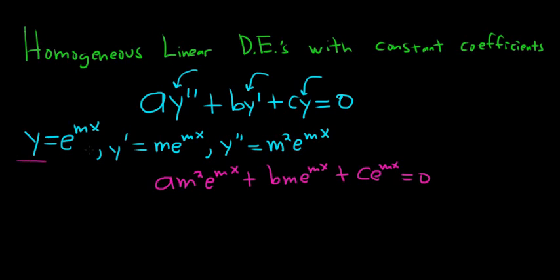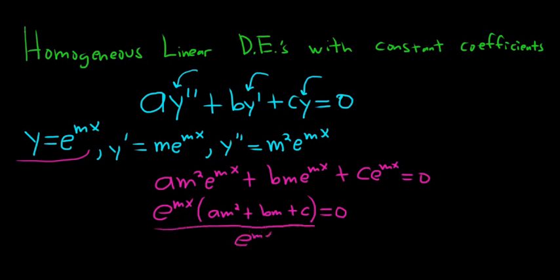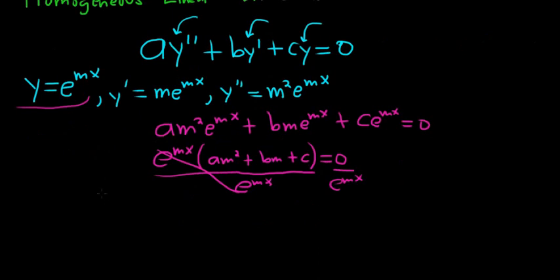So you want this to be a solution. What can you do next? You could pull out e to the mx, factor that out. So you'd get a m squared plus b m plus c, and that's equal to 0. e to the mx is never 0, so you could easily divide both sides by e to the mx. That leaves you with a quadratic equation in m.